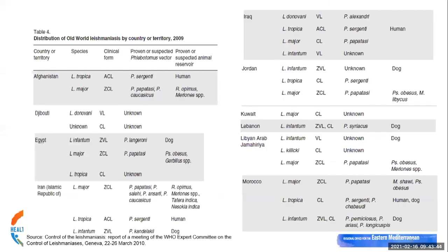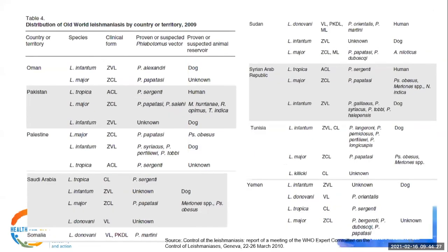This slide shows the distribution of sandfly vectors and associated diseases. For Leishmaniasis: anthroponotic cutaneous leishmaniasis is transmitted mainly by Phlebotomus sergenti; zoonotic cutaneous leishmaniasis is transmitted by Phlebotomus papatasi; and visceral leishmaniasis is associated with Phlebotomus orientalis in high-burden countries such as Sudan. A table lists the known vectors, the Leishmania species transmitted, and the forms of disease.